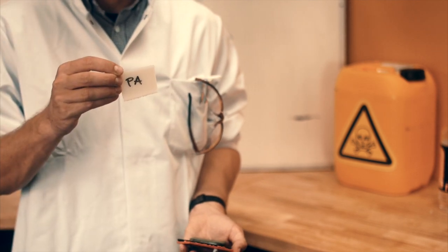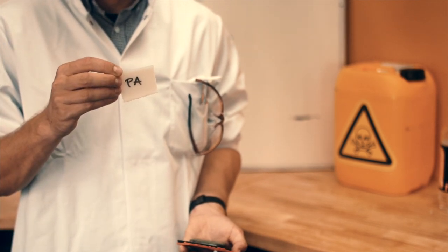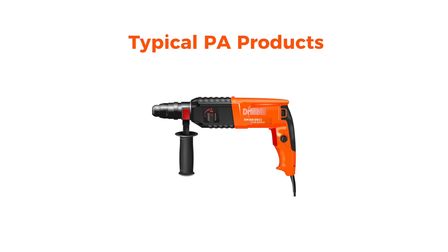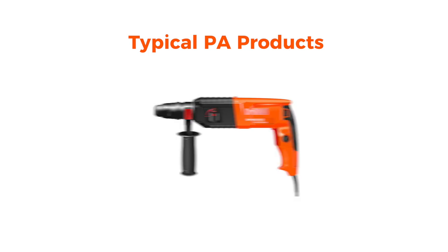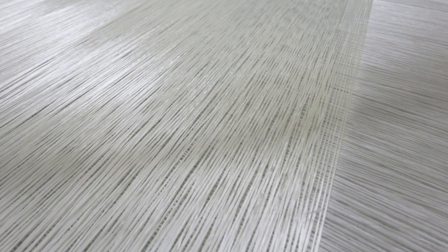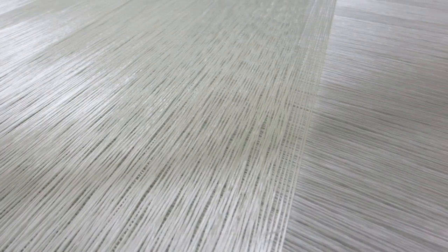Polyamide, PA. Polyamide is better known as nylon. This is a sturdy type of plastic, well suited for heavy-duty equipment such as drilling machines and motor parts. It's highly resistant to heat. A downside of PA is that it can soak up liquids like a sponge. This can be countered by adding glass fiber.